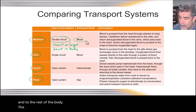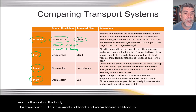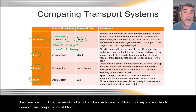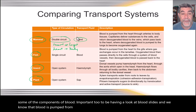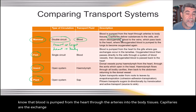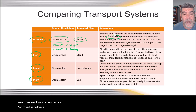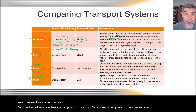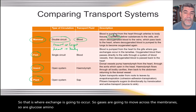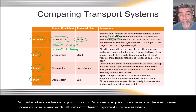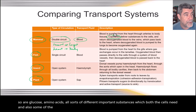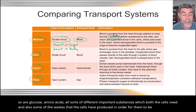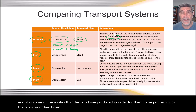The transport fluid for mammals is blood, and we've looked at blood and some of its components in a separate video. It's also important to look at blood slides. Blood is pumped from the heart through the arteries into the body tissues. Capillaries are the exchange surfaces — that is where exchange occurs. Gases, glucose, amino acids, and all sorts of important substances that cells need, as well as wastes that cells have produced, move across the membranes to be taken to various places in the body where they will be processed, filtered, and removed.